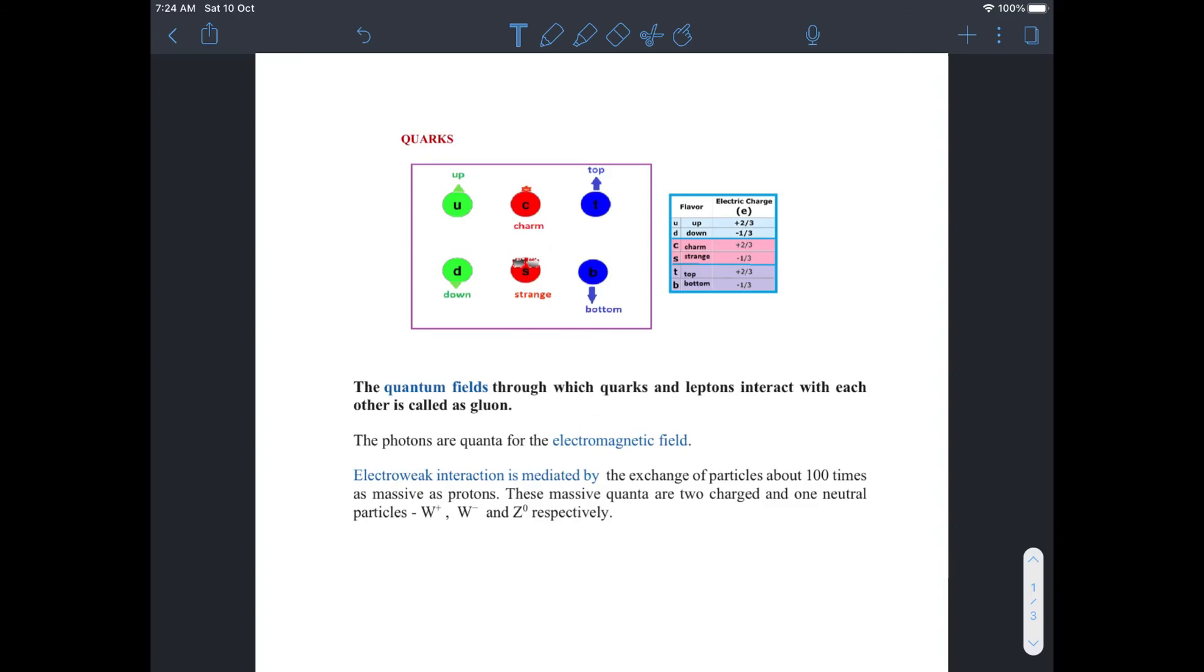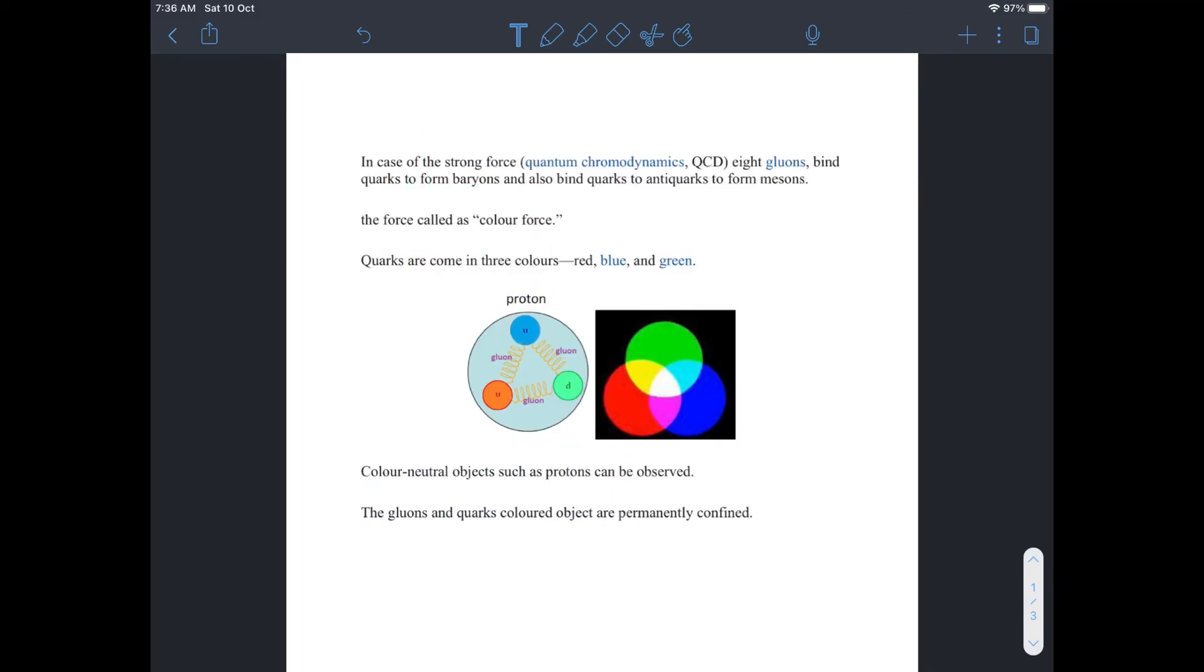Field quanta through which the quarks interact is known as gluon. The photons are the quanta for the electromagnetic field. Electroweak interaction is mediated by the exchange of particles which are about hundred times as massive as protons. These massive particles are W plus, W minus, and Z naught. In case of strong force, eight gluons bind the quarks to form baryons and also bind the quarks to anti-quarks to form mesons.